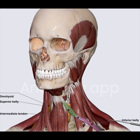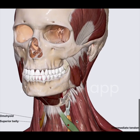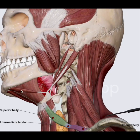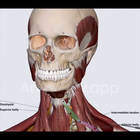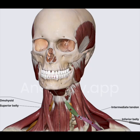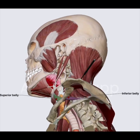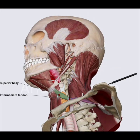The omohyoid, as you can see from the color coding, has got two bellies — the inferior belly and the superior belly — and they are connected together with an intermediate tendon. Remember, there was one more muscle we looked at with an intermediate tendon — the digastric. Similarly, this is the intermediate tendon here. This muscle connects the hyoid to the scapula — can you see? That's the scapula, it connects over there.